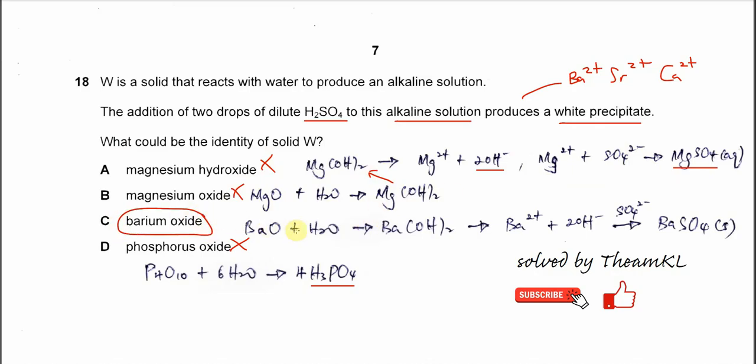Barium oxide dissolves in water to form barium hydroxide, and the barium ion in the solution will form a precipitate with the sulfate from this acid to form barium sulfate solid.